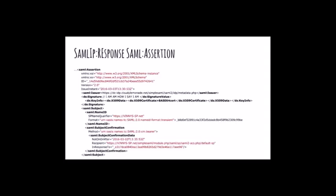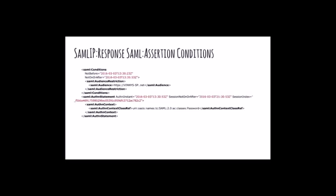We've got the name ID — the opaque name — and the SP name qualifier, which is the name of the service provider we're posting to. Then the subject confirmation, which is like a bearer token. The bearer — whoever holds this assertion — can give it to this URL in response to the original request, as long as it's not on or after a certain time. So basically, this message will self-destruct in whatever seconds it is till then. The conditions include 'not before' and 'not on or after', which help validate. There's an audience so we know it can only be used on this federated site. And we can see the user authenticated by a password mechanism.